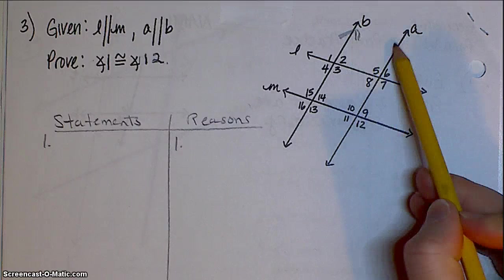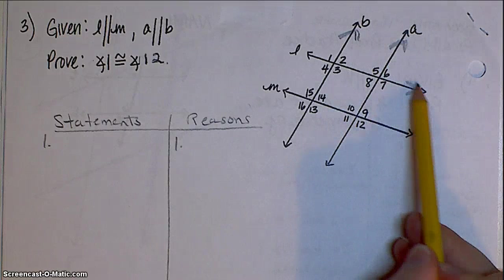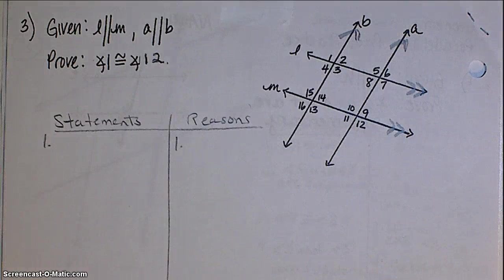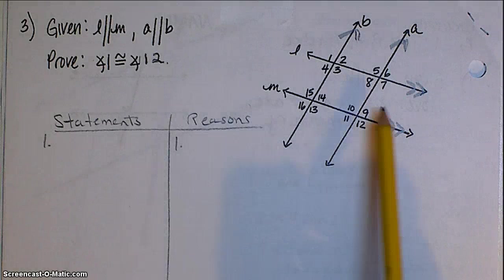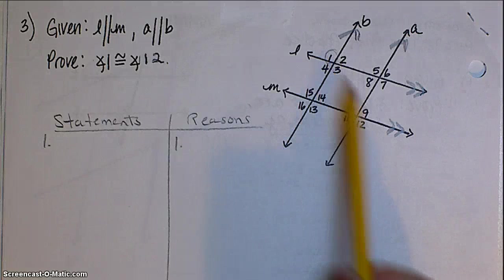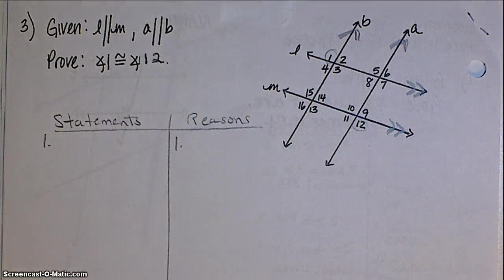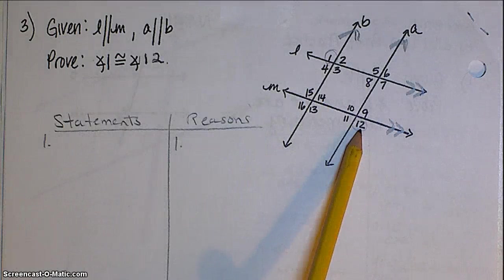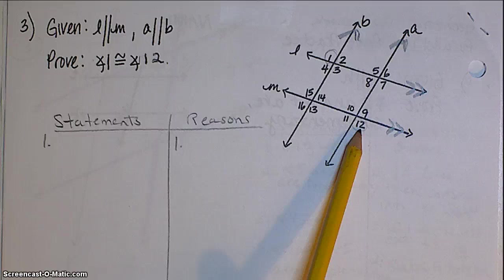So once again, go ahead and mark your diagram with the lines that are parallel. Well, then we start getting a game plan. So make note of what you're trying to get to. You're trying to show that 1 and 12 are the same. Right now, there's no way we could do that, because they're formed by two different sets of parallel lines. So we need to figure out a path.